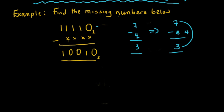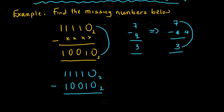So to find the asterisk here, I have to do 11110 in base two minus 10010 in base two. Zero minus zero is zero, one minus one is zero, one minus zero is one, one minus zero is one, one minus one is zero. So my answer is 1100 in base two.